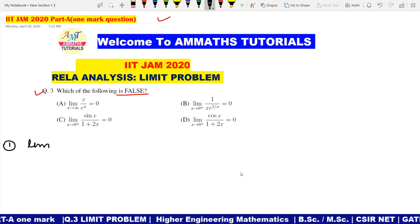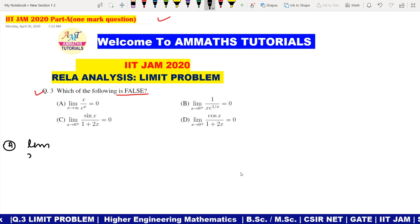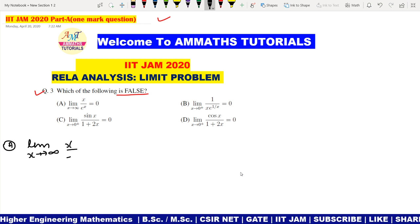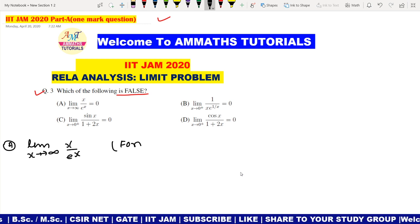Limit, this is the question. x tending to infinity, x upon e power of x. So we need to check the form. If we put it, it will be infinity by infinity.